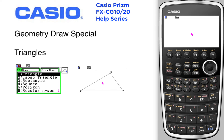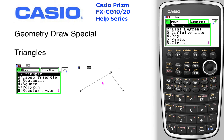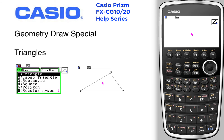Use Geometry Draw Special to draw triangles. Press F3 and toggle over to Draw Special. Let's draw a triangle and an isosceles triangle. There's two ways to do this.